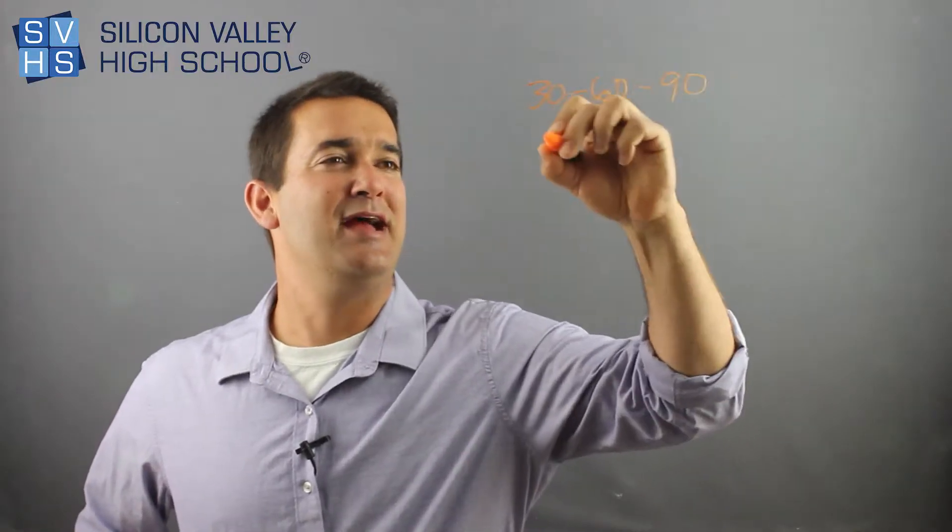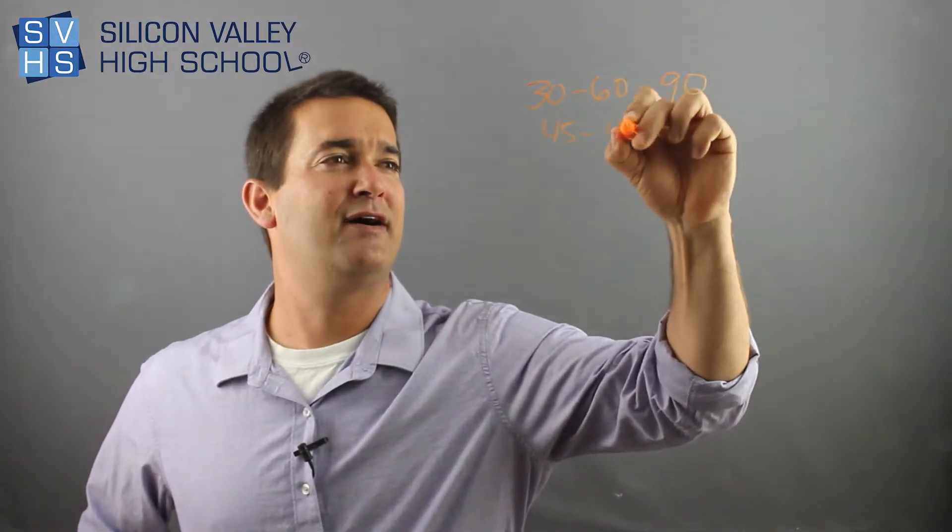So special triangles—automatically you're probably worried there's going to be several of them. You're going to have to memorize them. There's actually only two special triangles, which is good. You have the 30-60-90, and you have the 45-45-90.